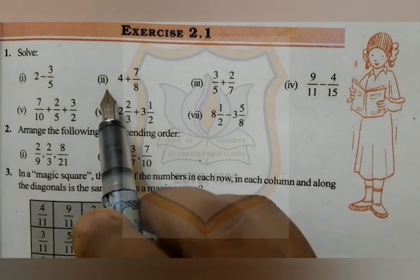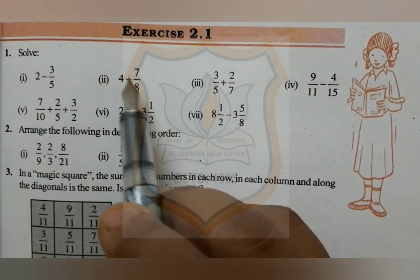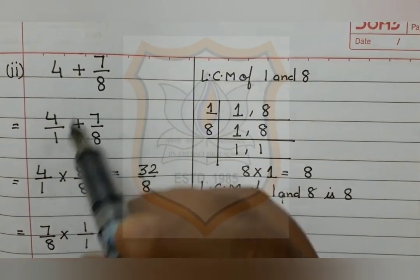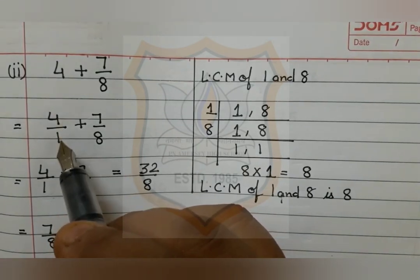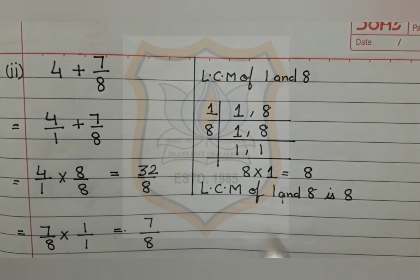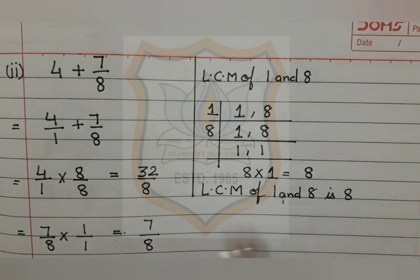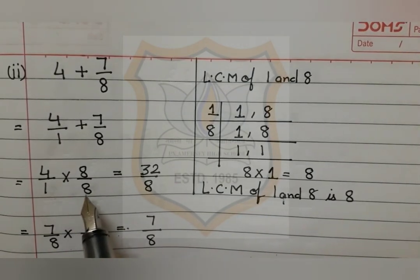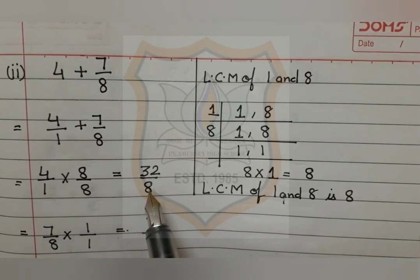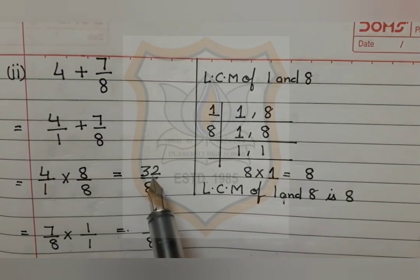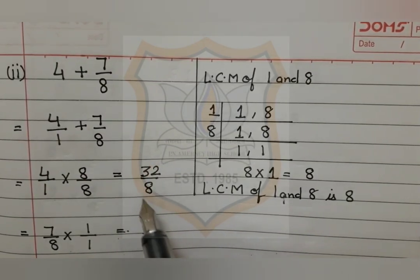The second part of question number 1 is 4 plus 7 upon 8. We put 1 at the denominator of 4, giving 4 upon 1 plus 7 upon 8. We take the LCM of 1 and 8, which is 8. For 4 upon 1: 1 is multiplied by 8 to get 8. Since the denominator is multiplied by 8, the numerator is also multiplied by 8: 4 times 8 is 32. Our fraction becomes 32 upon 8.